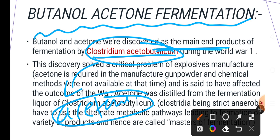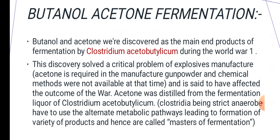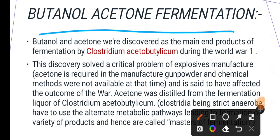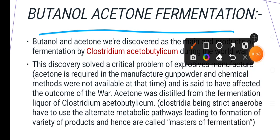This acetone was used to manufacture gunpowder in World War One. During that time, no chemical methods were available for the production of acetone, which is why butanol acetone fermentation was used to produce acetone with the help of Clostridium acetobutylicum.